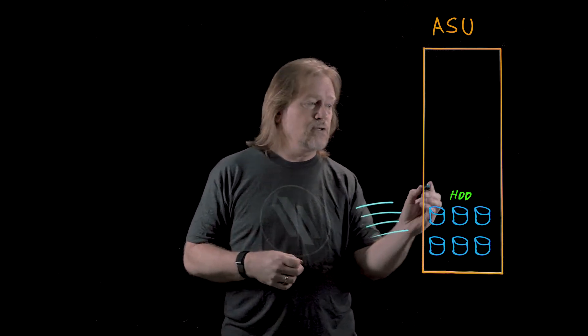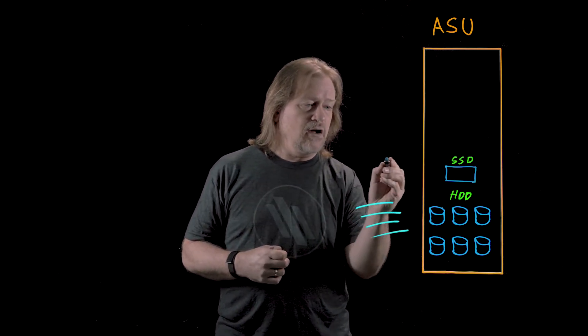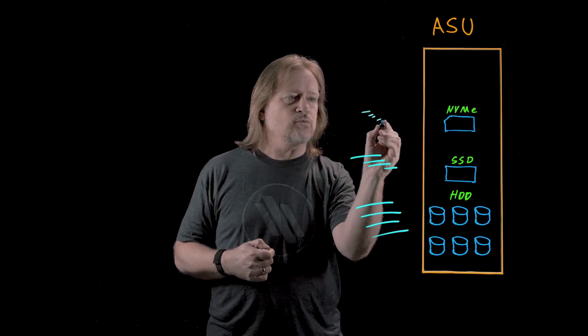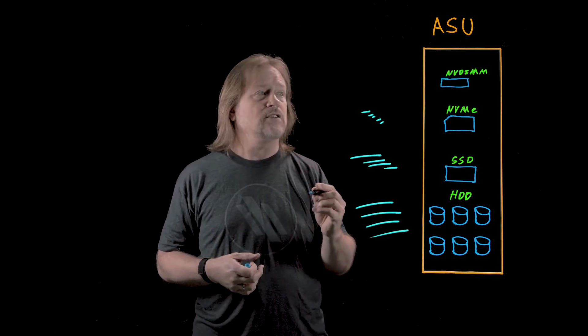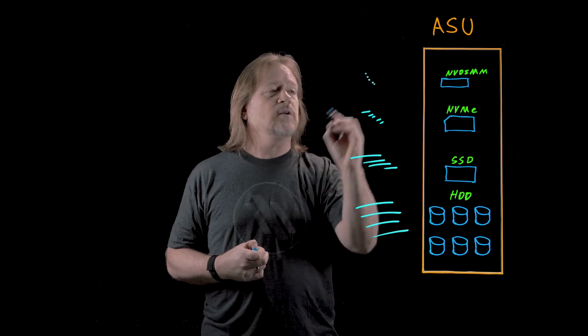Let's start with the hardware. The ActiveStore Ultra chassis has six hard drives in it, and they're really good at delivering bandwidth if you give them large transfers, meaning large files. It has a traditional flash in it, and that's really good if you give it small transfers for small files. It has an NVMe flash in it that's really good at very low latency, very small transfers. And then it has an NVDIMM stick that is a non-volatile piece of DRAM, and that is extremely low latency.